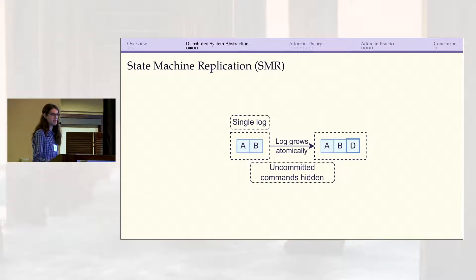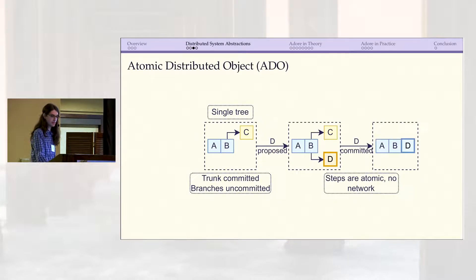If we think about the goal of consensus, then really the purpose is to provide this illusion of a single state, which is what state machine replication, or SMR, does. Here we model the system just as a single log that atomically grows from one committed state to another without any of these internal inconsistencies being exposed. That's great for building more complex applications, but it's too abstract for reasoning about something like reconfiguration, which happens more under the hood.